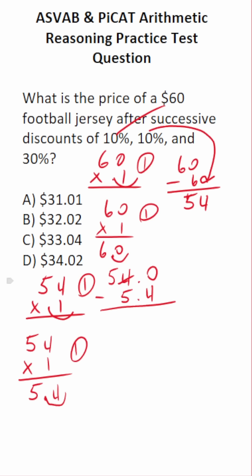0 minus 4 we can't do, so we have to borrow. This becomes 3, and this becomes 10. 10 minus 4 is 6. Drop down our decimal. We can't do 3 minus 5, so we're going to have to borrow. This is going to become 4. This is going to become 13. 13 minus 5 is going to be 8, and then 4 minus nothing is 4.